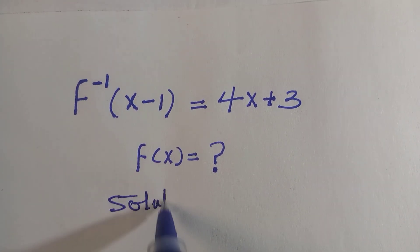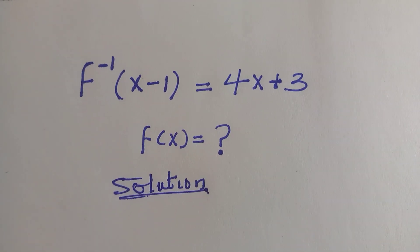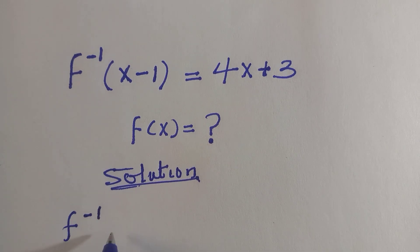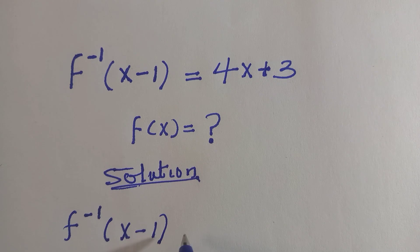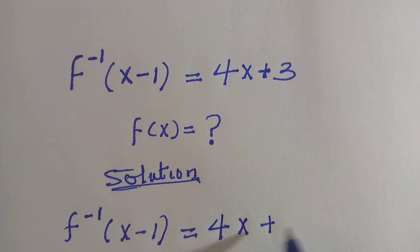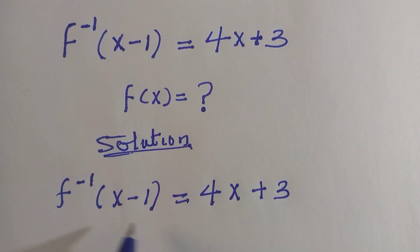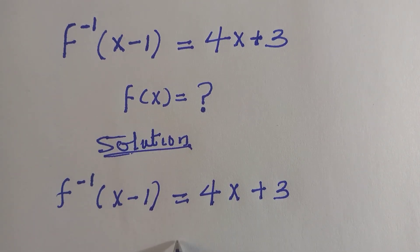We have a solution like this, and I'm going to write the question as f inverse of x minus 1 equals 4x plus 3. There are two ways of solving this, but I'm going to use the first one, and we call it form manipulation.